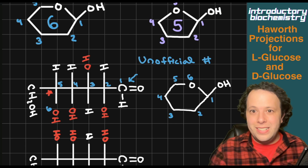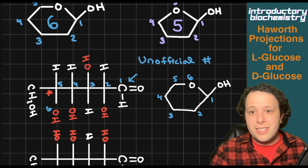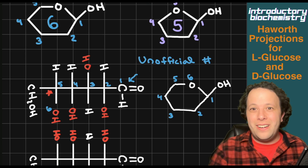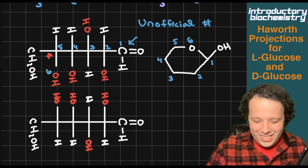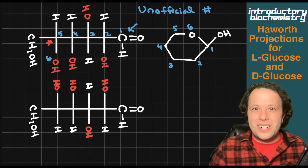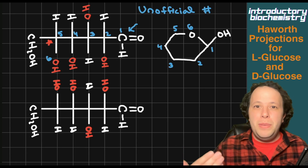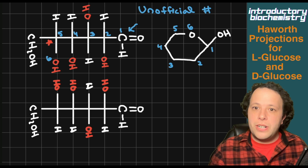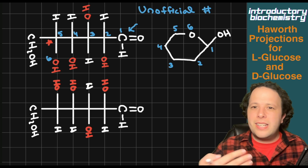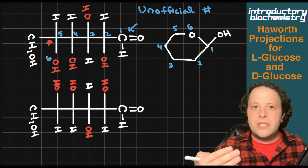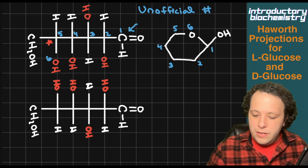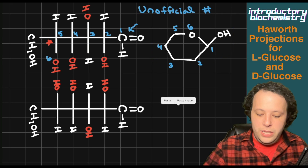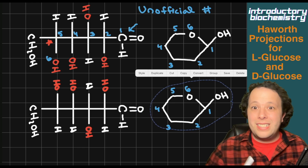If you came here to figure out mechanisms, go to my hemiacetal and acetal video — I will go through the mechanism of how to do this. This is more about how to draw Haworth projections quickly. Now it's the same idea for the other structure — being that they're both enantiomers, their skeletal structure is still the same; it's the chirality that's the different part. So we're only putting the ring here, just the carbons. Both of these structures are going to be that six-member ring.